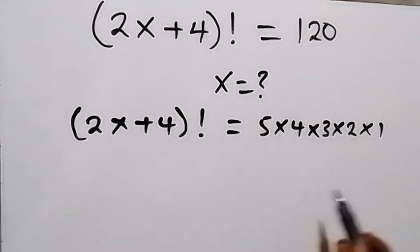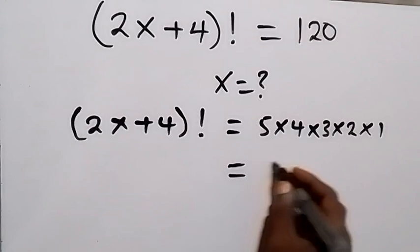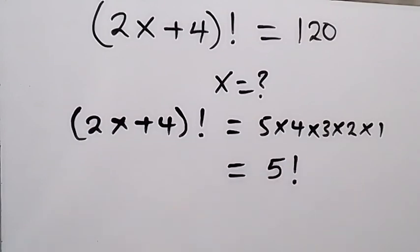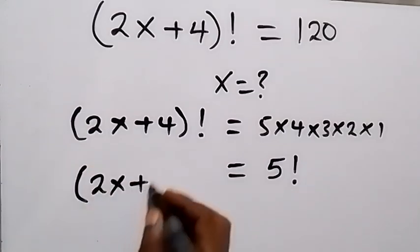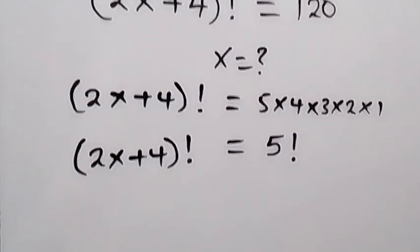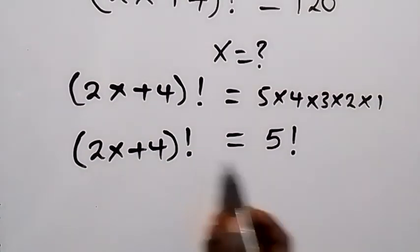Then what we have here is the same thing as 5 factorial. So we can say that (2x+4)! is equal to 5 factorial.